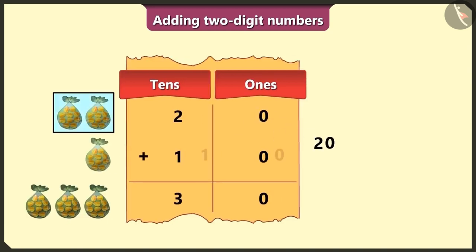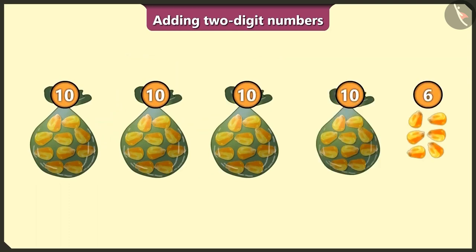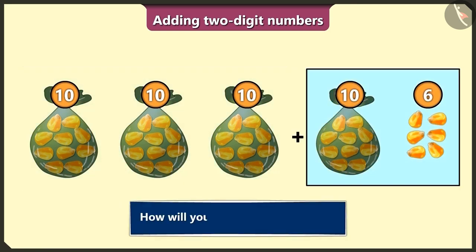Yes, adding 20 grains and 10 more will give us a total of 30 grains. Now see, here are 30 grains. To these I will add 16 more. So how do we add 30 and 16?